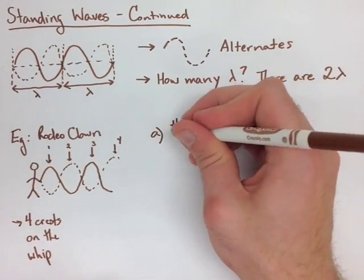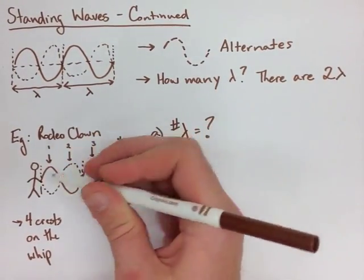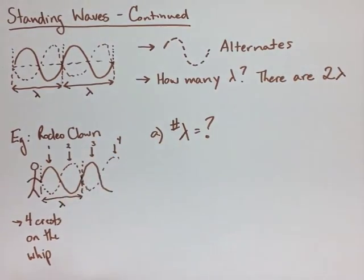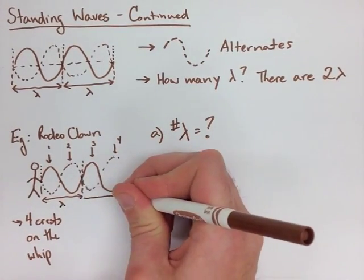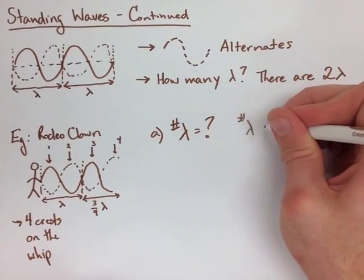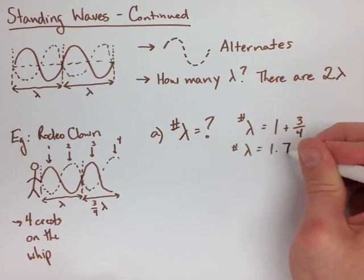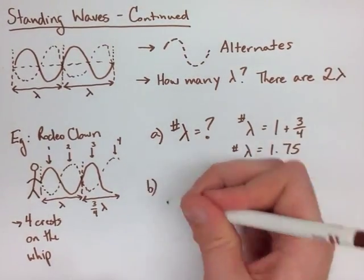We've got one, and then it starts repeating itself. But we don't have a full next one, because it doesn't actually come back down to the middle, because there's not a closed end. We've got one plus three quarters. So the number of wavelengths is 1.75.